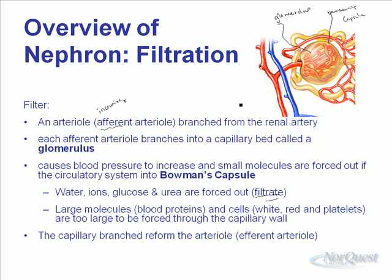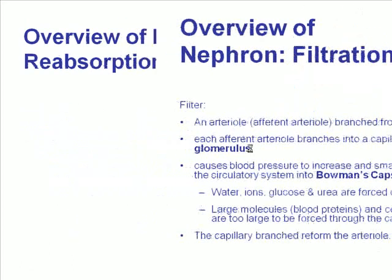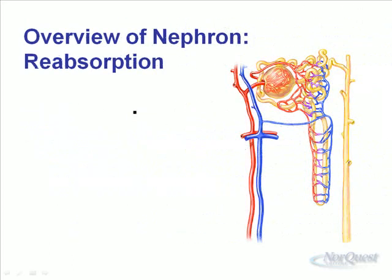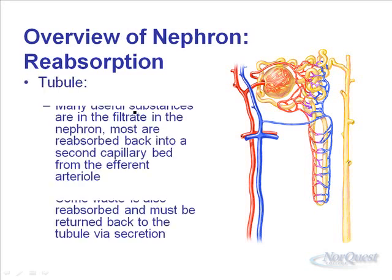The capillary branches reform, and here we have the outgoing efferent arteriole. Now, all of the good stuff — all of the glucose, our ions, a lot of the water — just left our circulatory system. That's not good; we need most of those things. The only thing we really wanted to get rid of was the waste. So most of it has to get reabsorbed back into our circulatory system. This happens in the structure called the tubule. Here's the beginning of the tubule — this is the proximal tubule, proximal because it's close to the glomerulus.